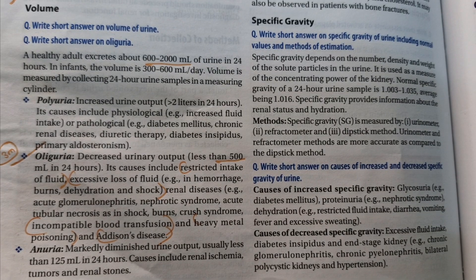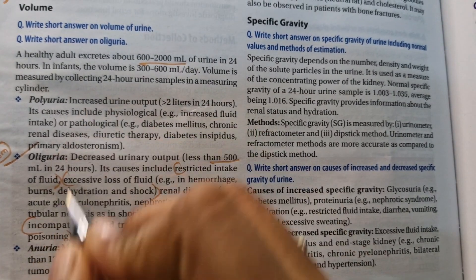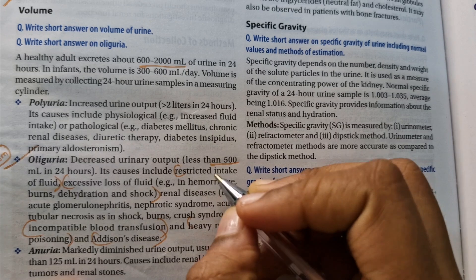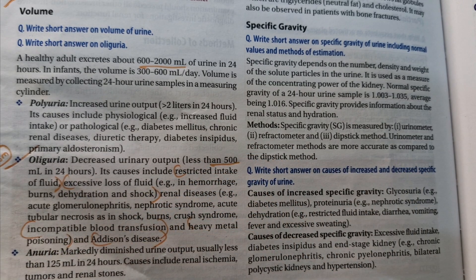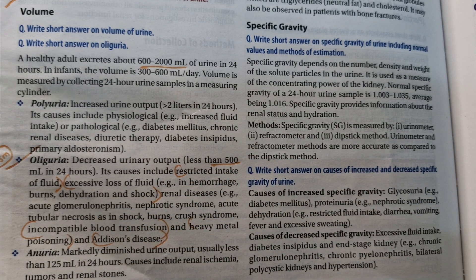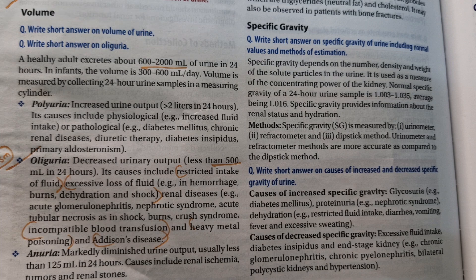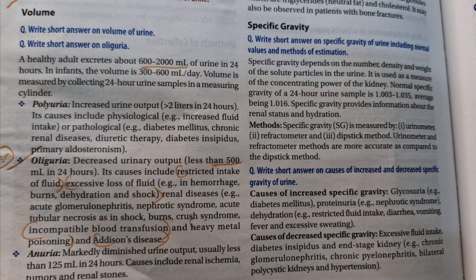Oliguria is a three marks important topic. This comes under physical examination. Oliguria means we always calculate urine output for 24 hours. In 24 hours, we call it as Oliguria.